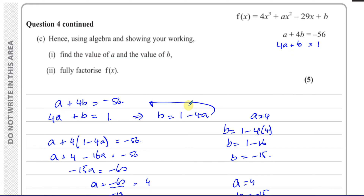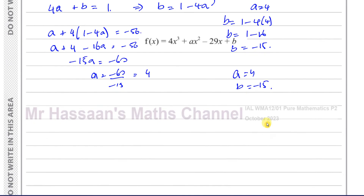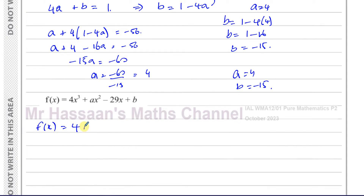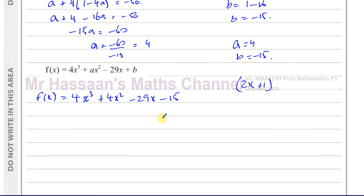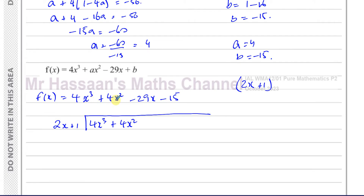Now we need to fully factorize f(x). With a = 4 and b = -15, we have f(x) = 4x³ + 4x² - 29x - 15, and we know 2x + 1 is a factor. We can do this by long division. If there were a missing term, we'd insert a 0 coefficient to keep the proper position, but all terms are present here.